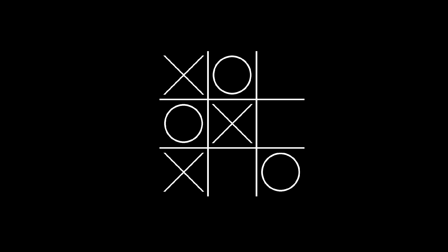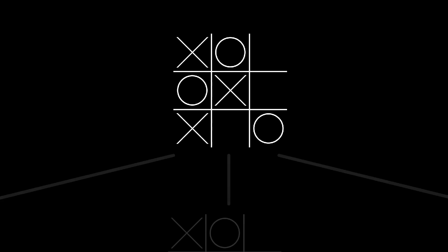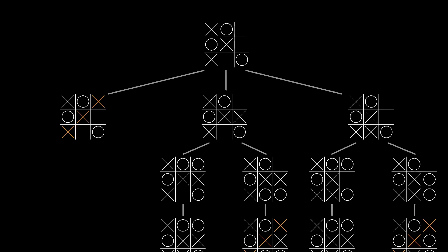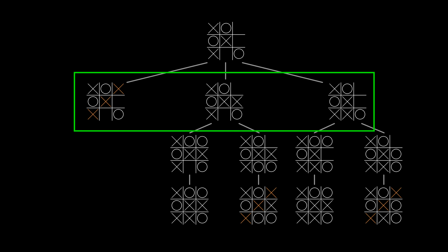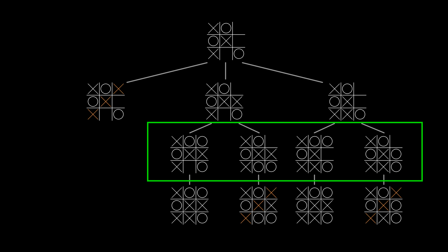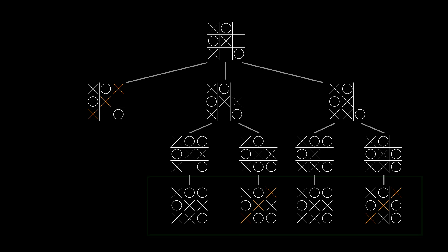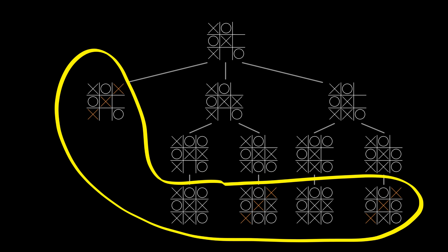Say that we're in this position with 3 moves left in the game, considering all the options before us. We can represent these options as a tree, accounting for every possible next move by X, response by O, and final move by X.